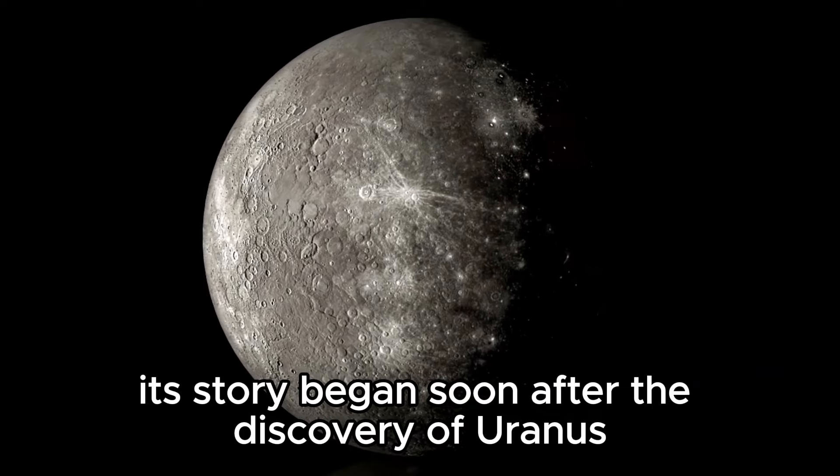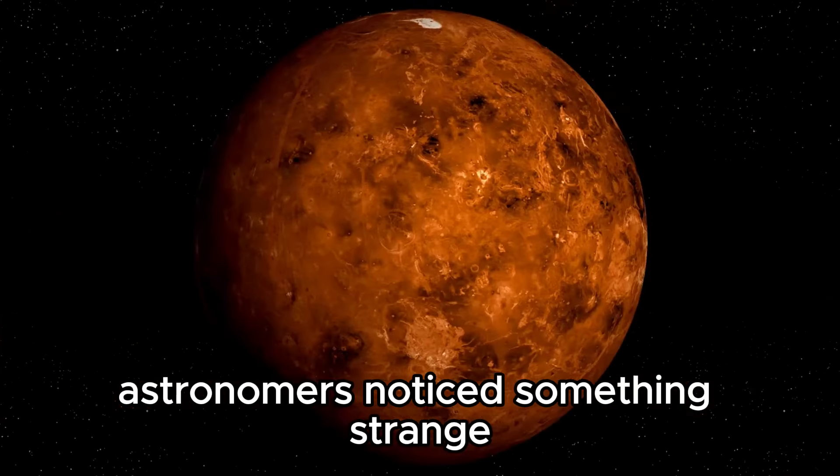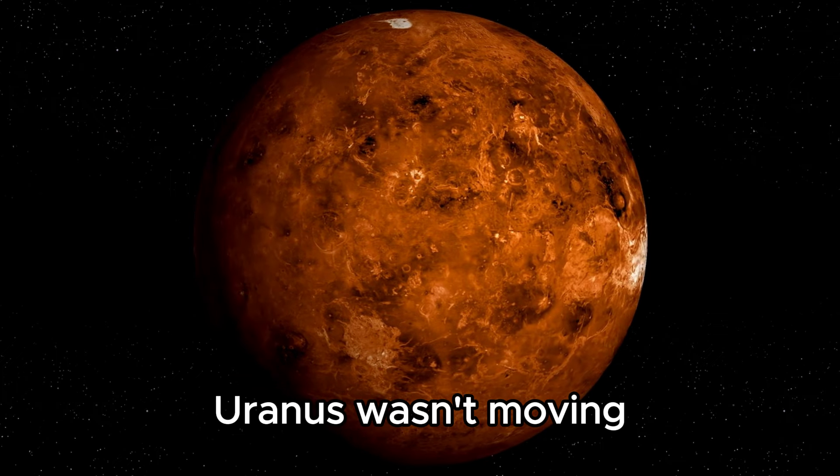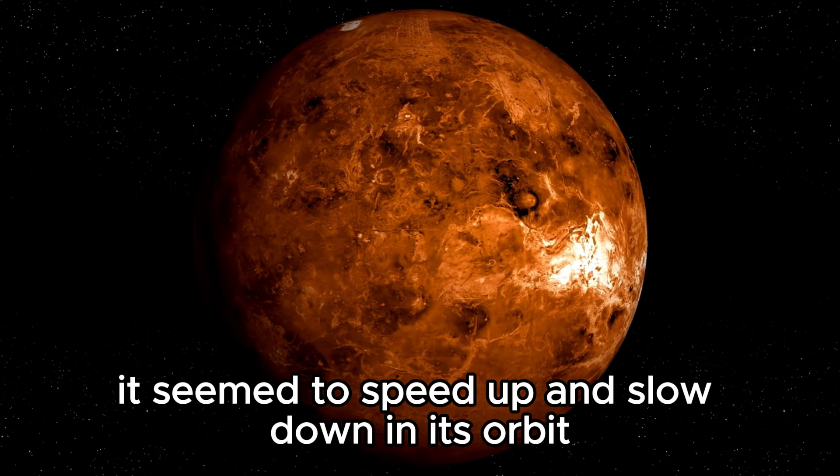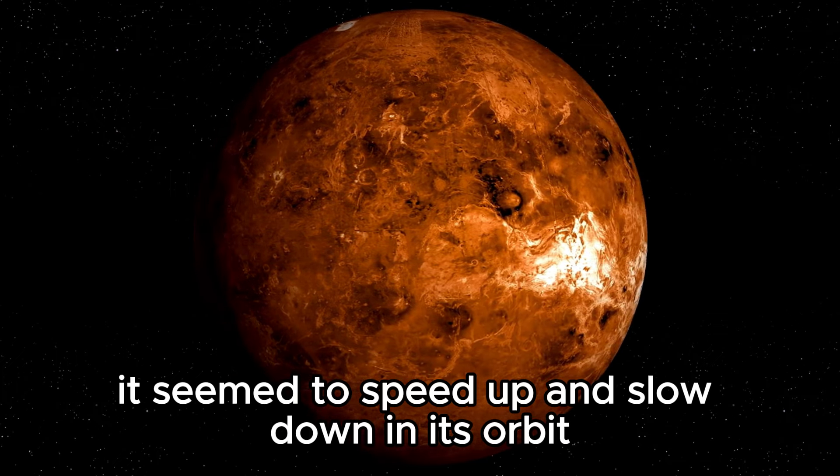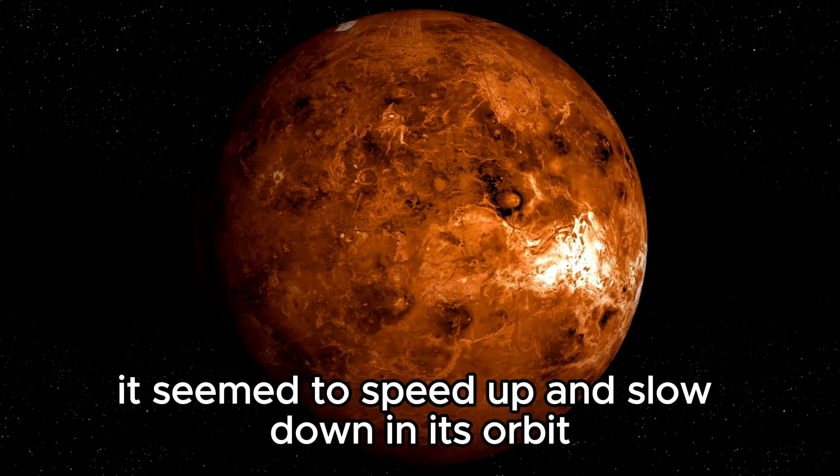Although Planet 9 was first proposed in 2016, its story began soon after the discovery of Uranus in 1781. Over the years, astronomers noticed something strange. Uranus wasn't moving exactly as their calculations predicted. It seemed to speed up and slow down in its orbit, hinting that there might be an unseen force acting on it.